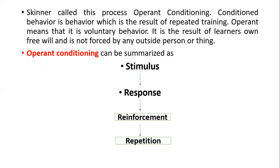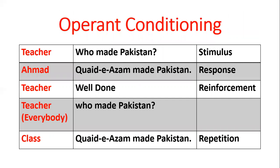Operant conditioning can technically be defined in four steps: one is stimulus, the second is response, the third is reinforcement, and the fourth is repetition. Let's study all these steps in detail with an example of how operant conditioning works in a class.